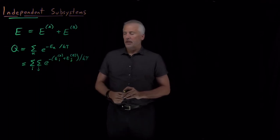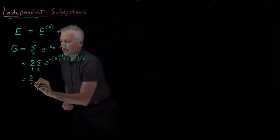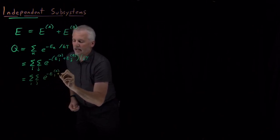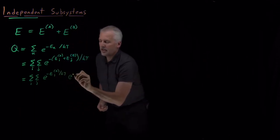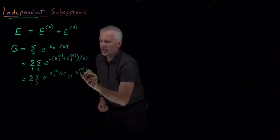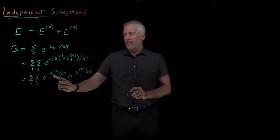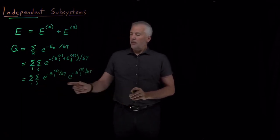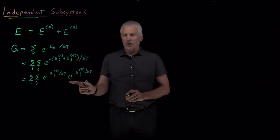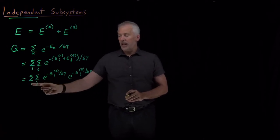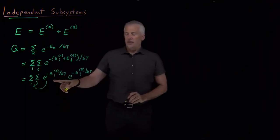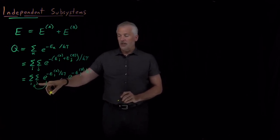Now I've written the total energy as the sum of these two energies. Of course, e to the sum can be decomposed as a product of two exponentials, so I can write that as e to the minus E_A over kT times e to the minus E_B over kT — remembering that I'm summing over all the states i that system A can be in and all the states j that system B can be in. But there's no reason to keep both exponential terms inside both sums. The sum over j only applies to system B and the sum over i only applies to system A, so I can pull the first Boltzmann factor out of the second sum, because it doesn't depend on j.